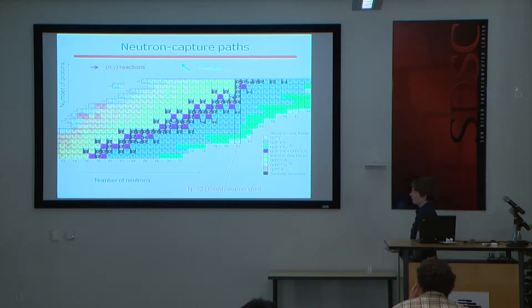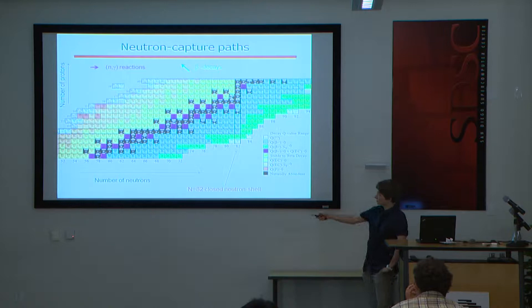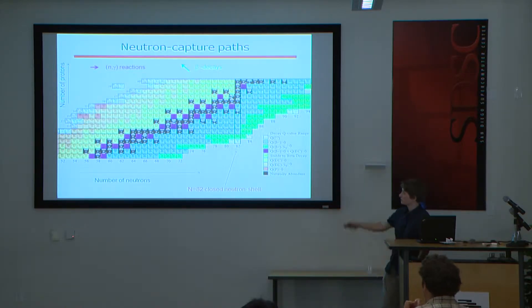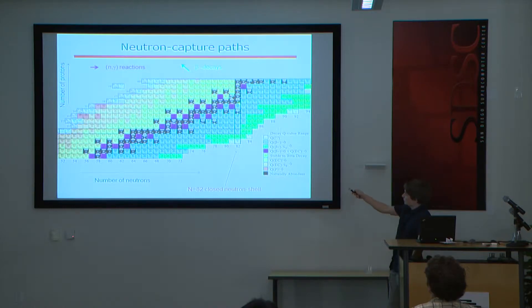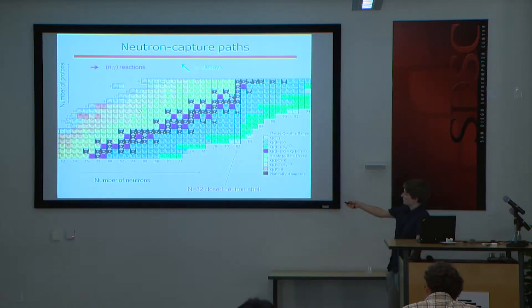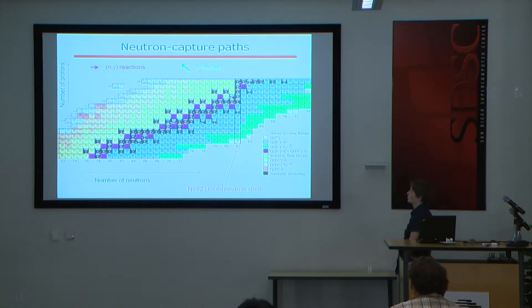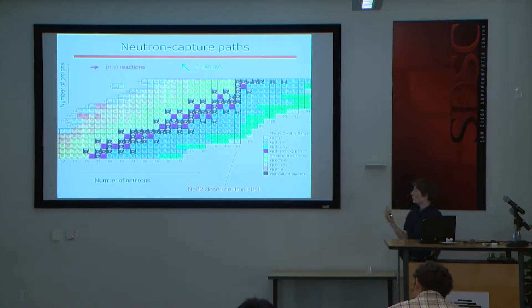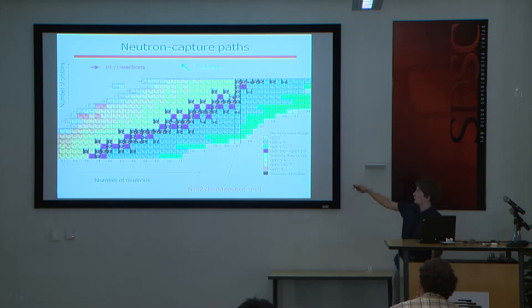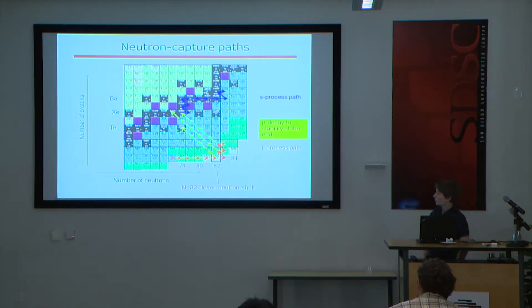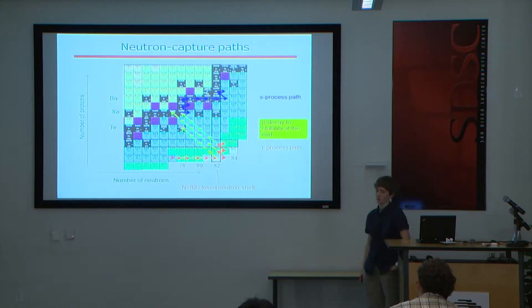In terms of nuclear physics, neutron captures move you one step to the right on the chart of nuclides — you stay in the same element but add one neutron — while beta decays go diagonally up, internally converting a neutron to a proton. The R-process path occurs far from stability because many neutron captures happen before the first beta decay. The S-process path stays very close to the stable isotopes, with at most one neutron capture before beta decay.